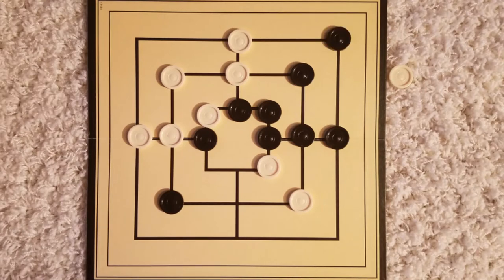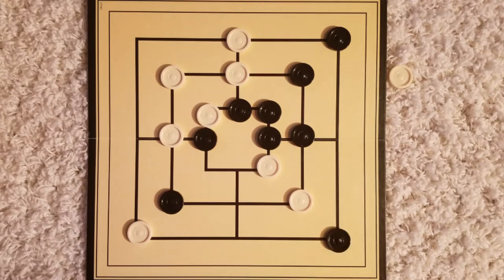Phase two begins when both players have used all their pieces. Now still taking turns, players slide their pieces around the board to other open spaces in order to align them to get a mill.